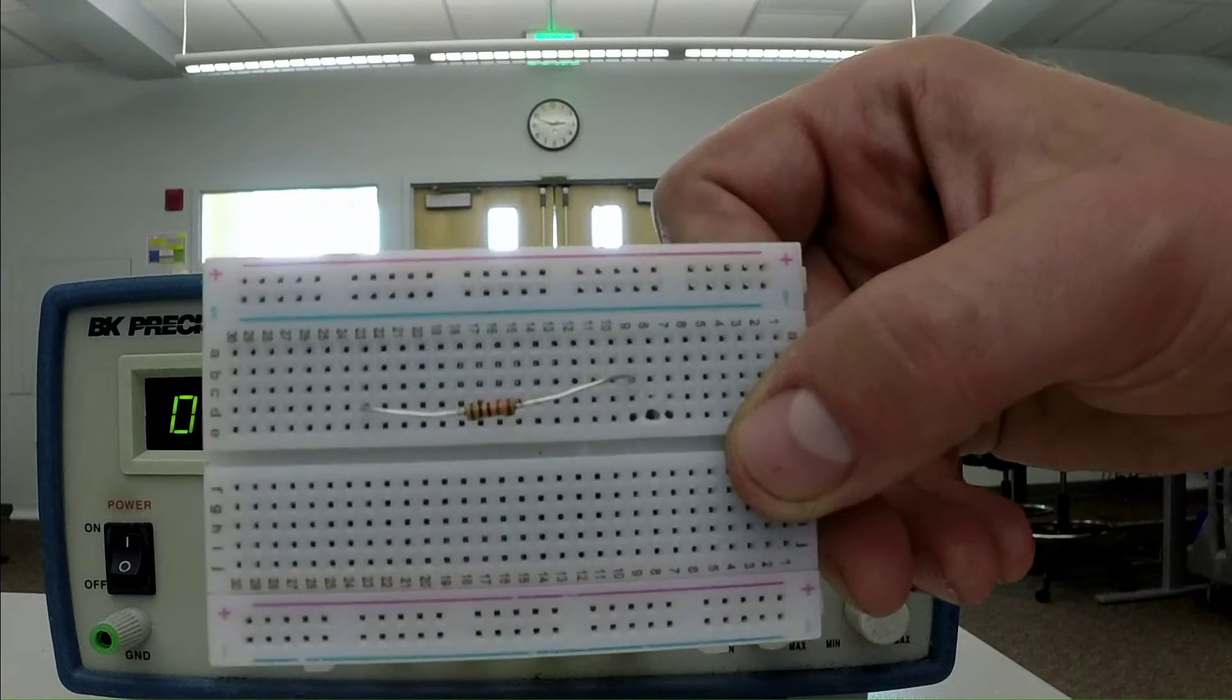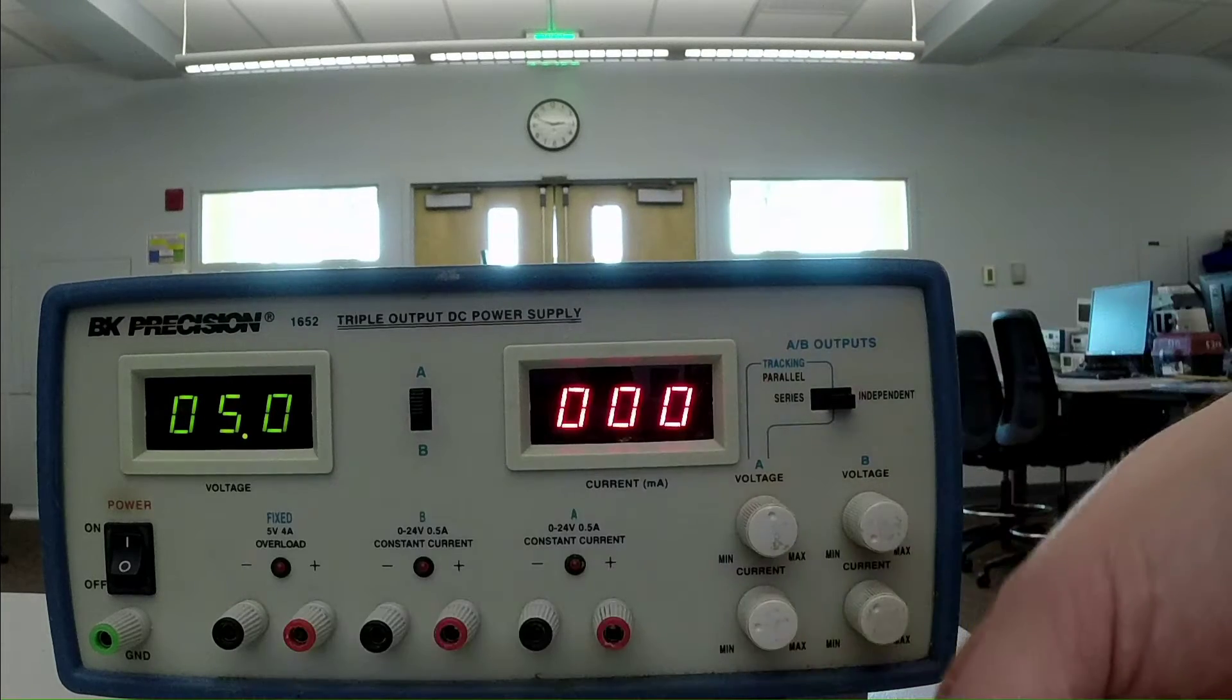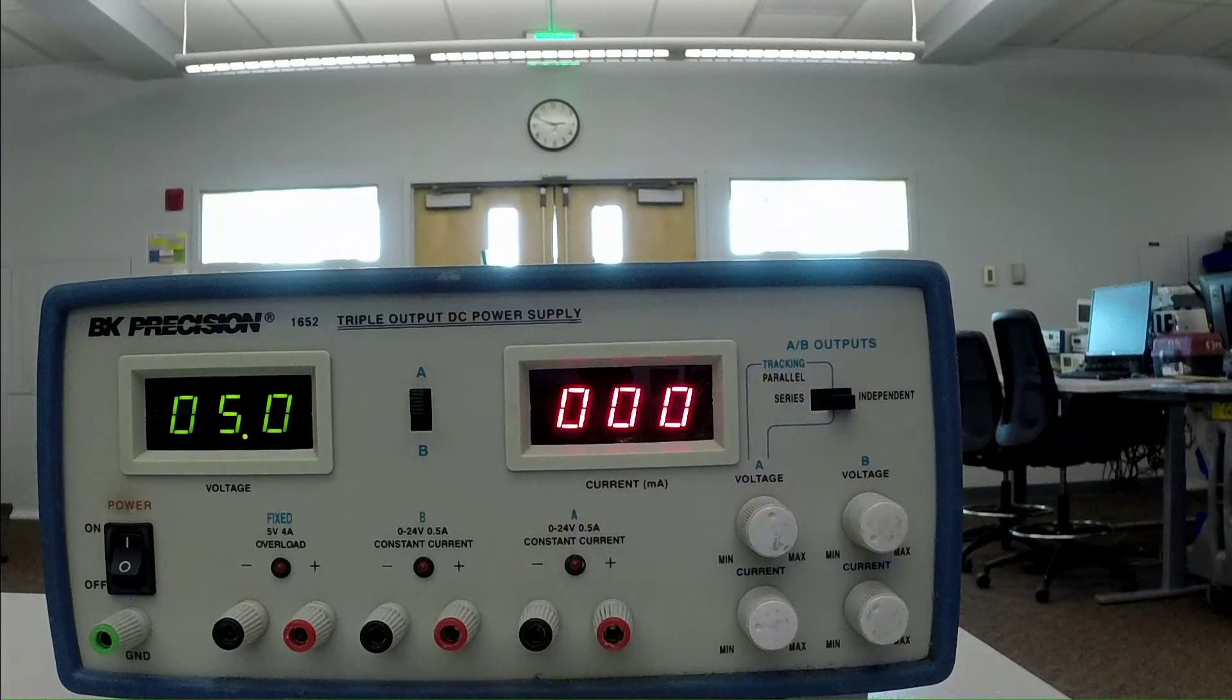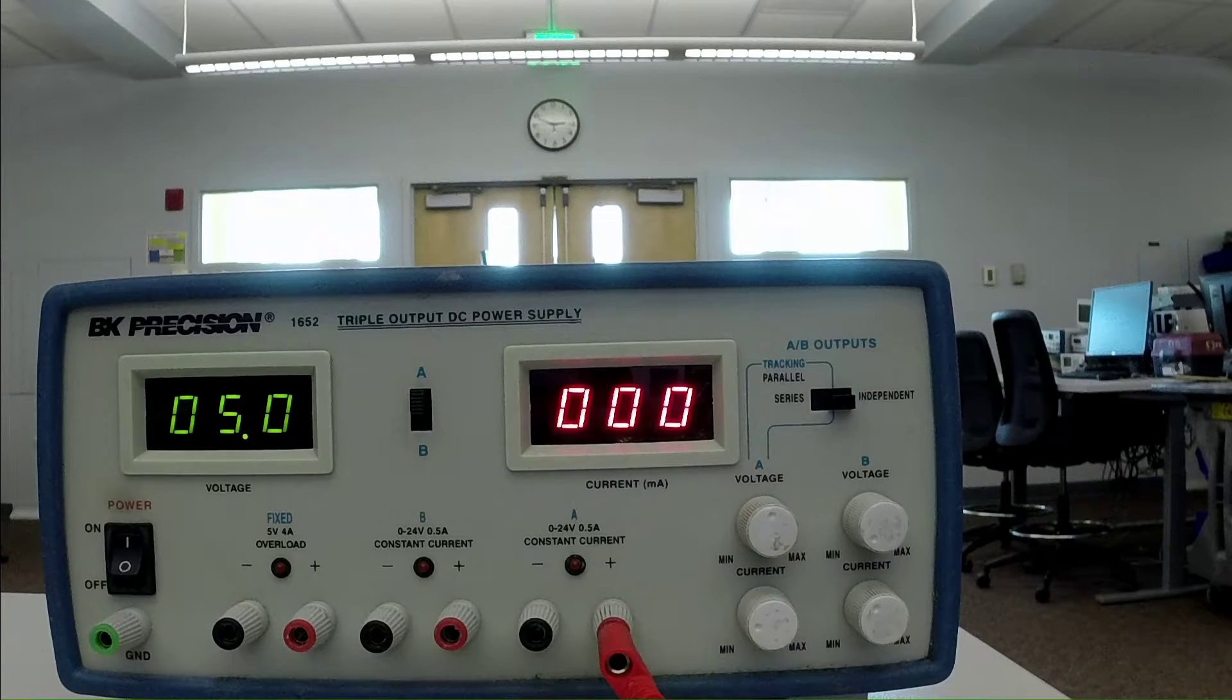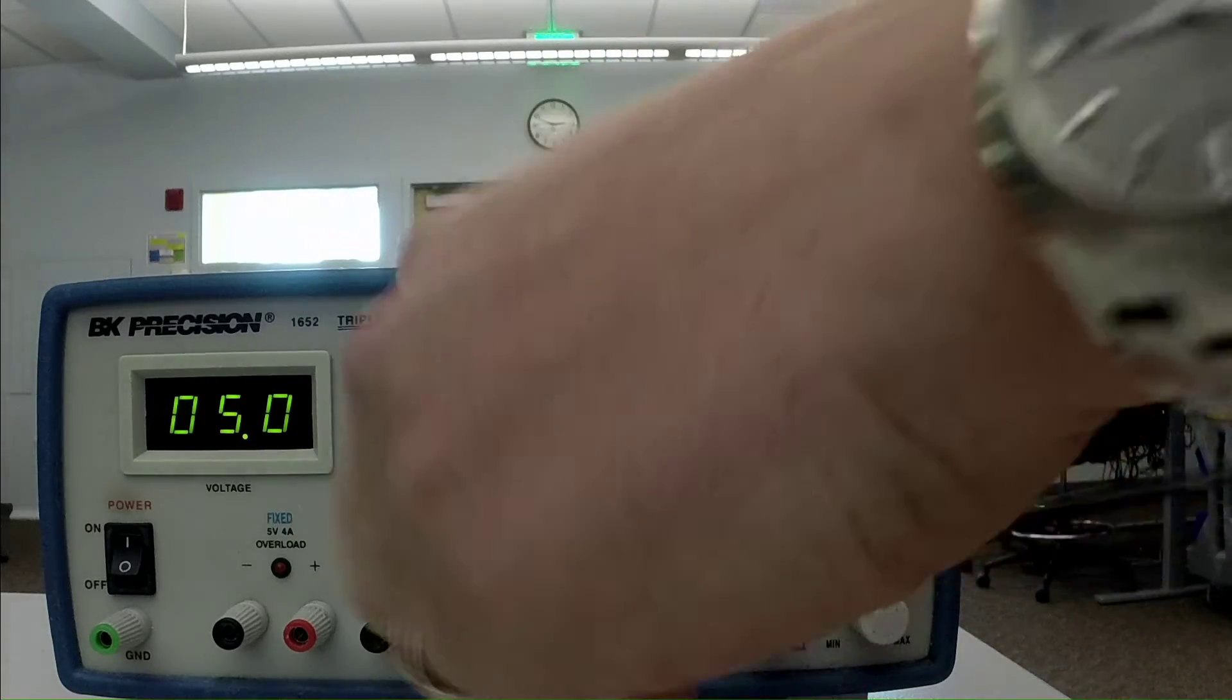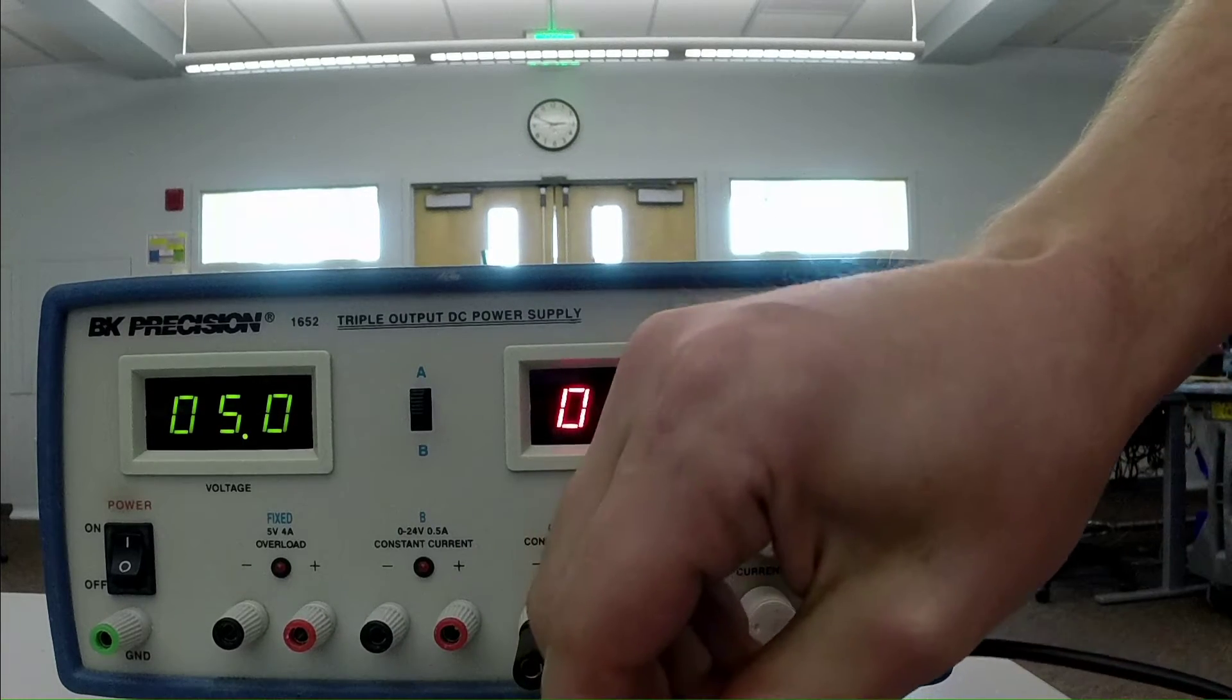So here on my breadboard, I just have a 1 kiloohm resistor plugged into the breadboard. I'm going to use some leads to connect that to the power supply. So to connect to channel A, we're going to use the A terminals here. So we need a positive. And we need a negative so that our current has a return path to make it back into the power supply.